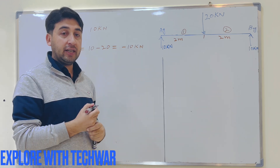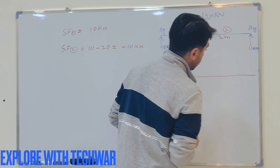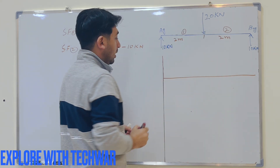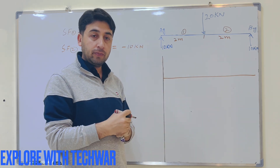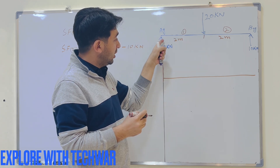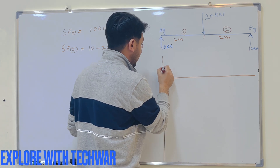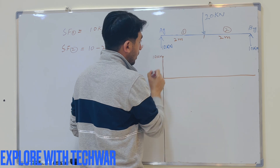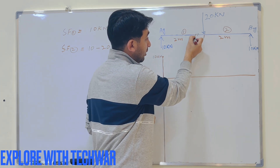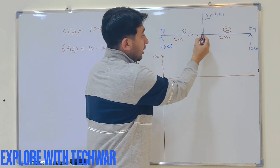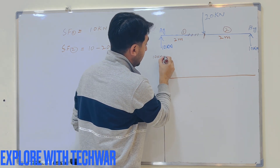Now let's draw the shear force diagram. We set up axes with the x-axis representing the length of the beam and the y-axis representing the magnitude of the shear force. The shear force starts from the beginning of the beam at 10 kN and remains constant at 10 kN up to the point where the 20 kN force is applied, because the shear force stays the same until we cross that point.